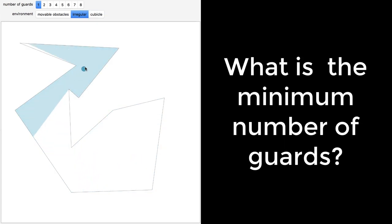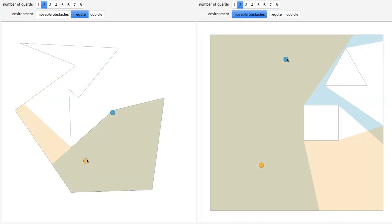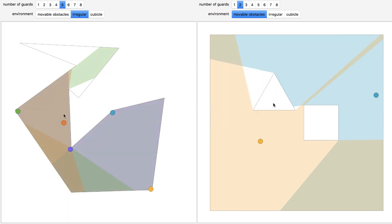There are many galleries that cannot be covered with one guard. Obviously, having one guard per vertex would solve the problem, but guards and video cameras cost money. We want to minimize the number of guards.